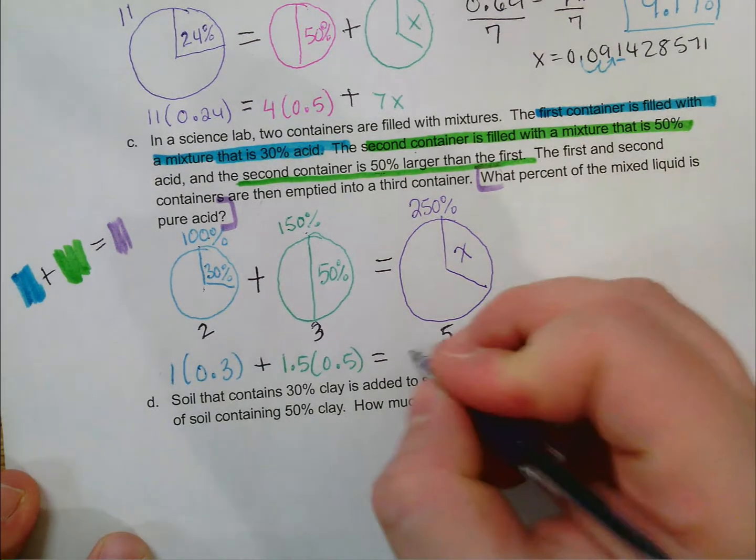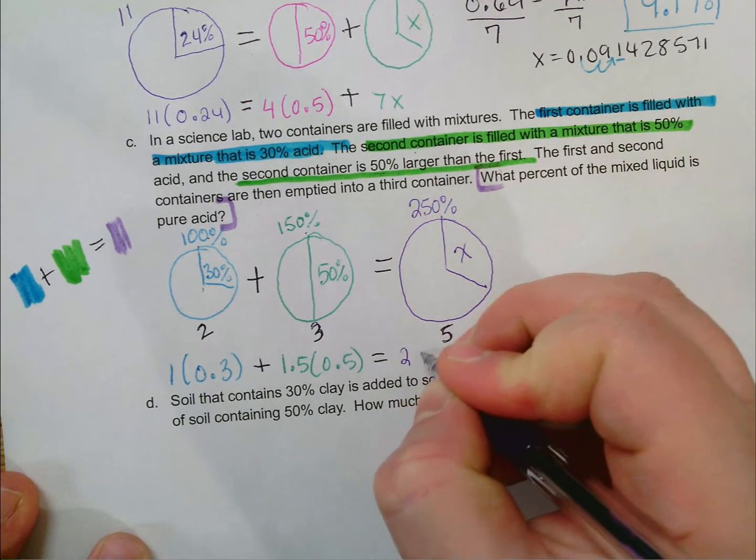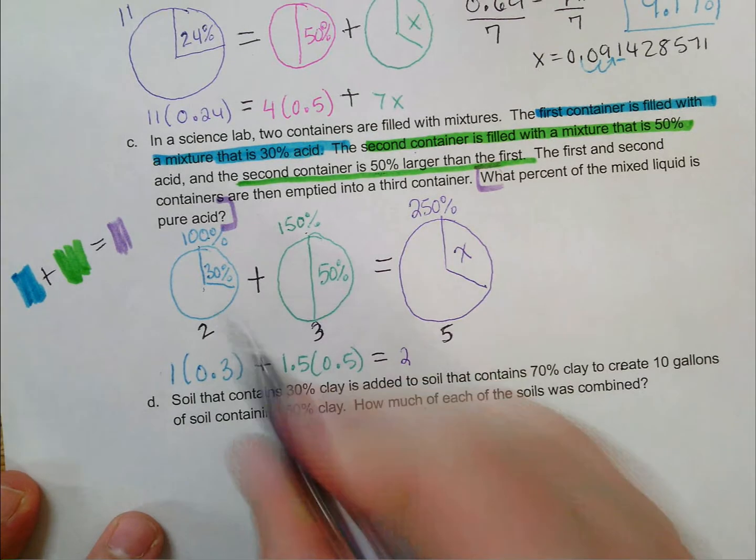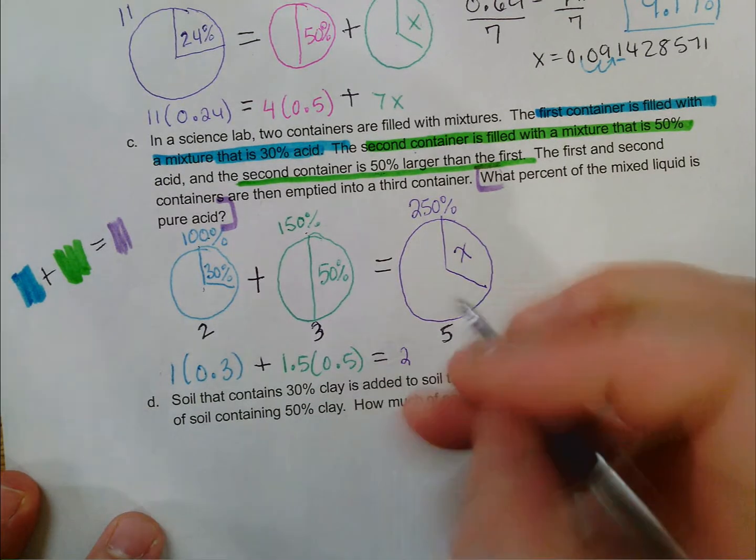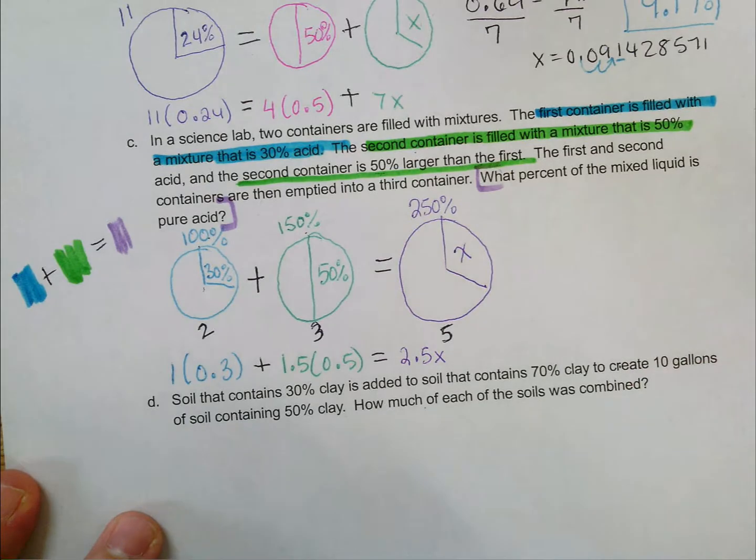So two and a half times as big, and we don't know what percent of it is acid. There's my equation. Now I'll need to solve.